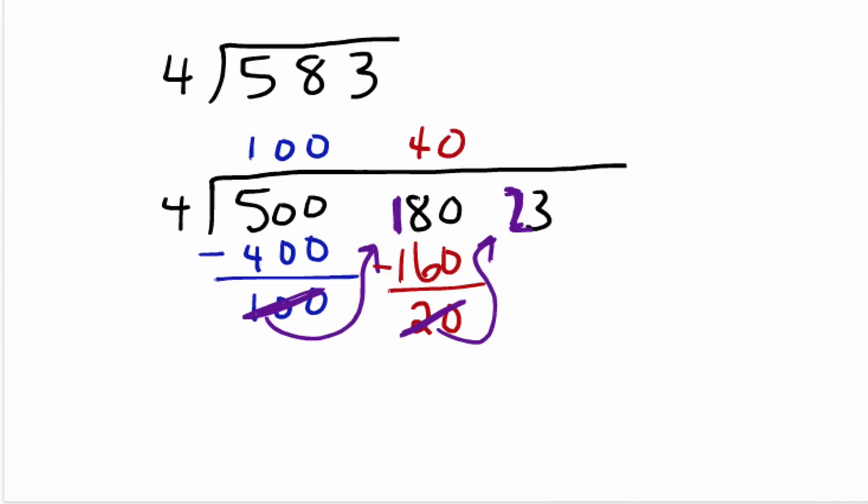And now I say, how many times does 4 go into 23? And I can say 5 times. So 5 times 4 is 20. And we have 3 left over.